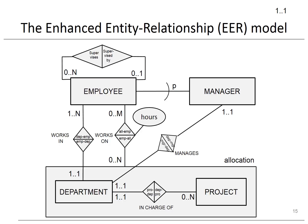Here you can see the earlier HR administration example, now enriched with EER modeling concepts. More specifically, we partially specialized employee into manager. The relationship type managers connects the manager subclass to the department entity type. Department and project have been aggregated into allocation, and this aggregate participates in the relationship type works on with employee.